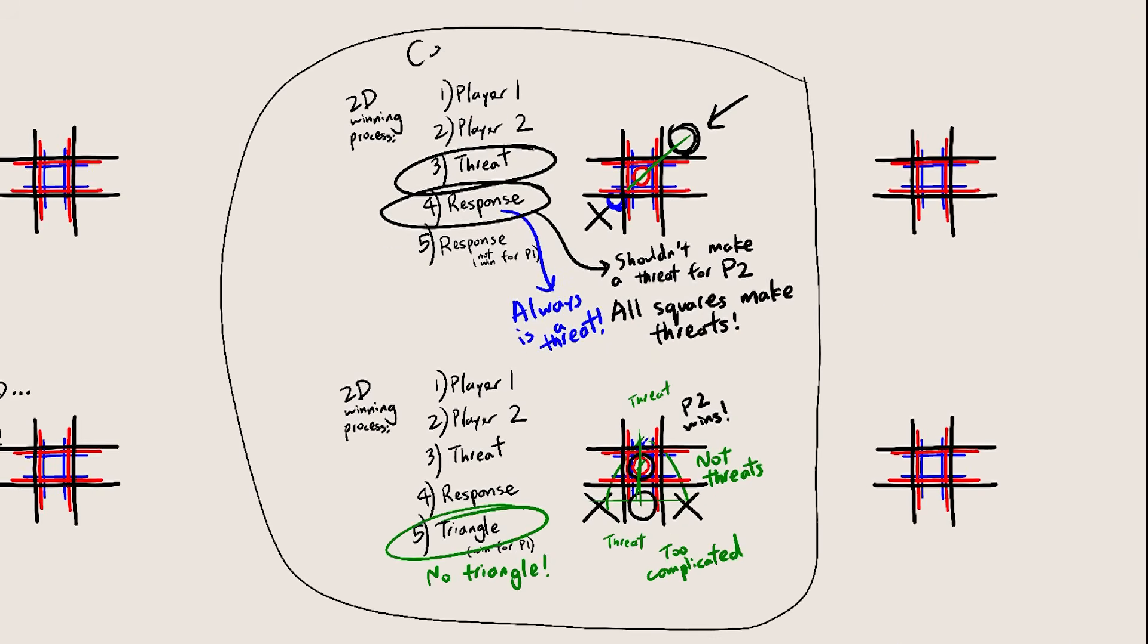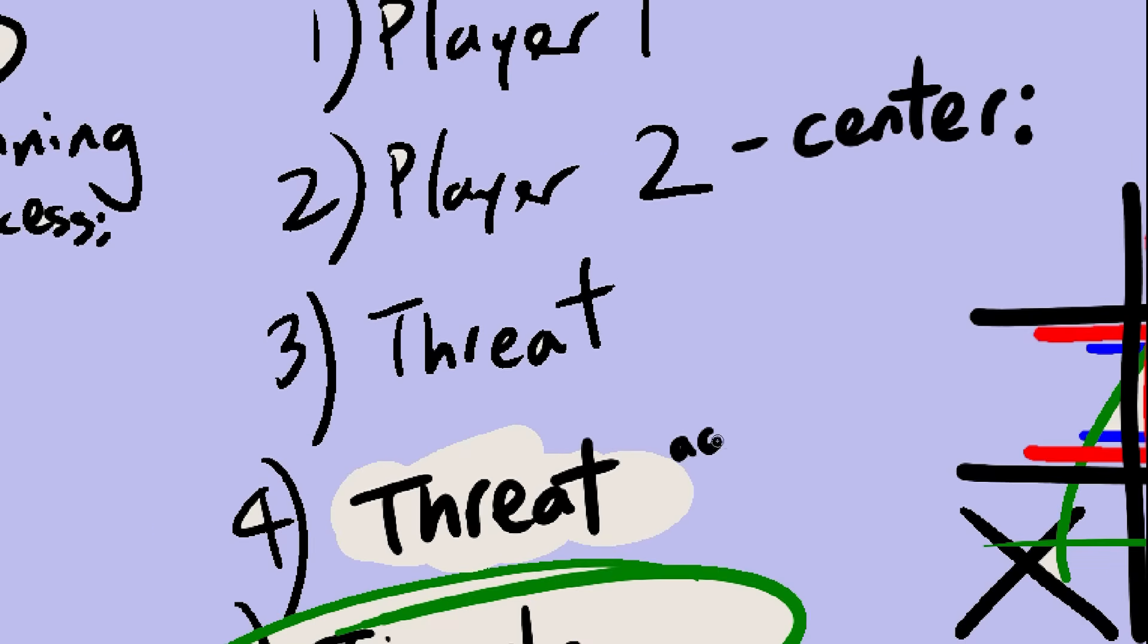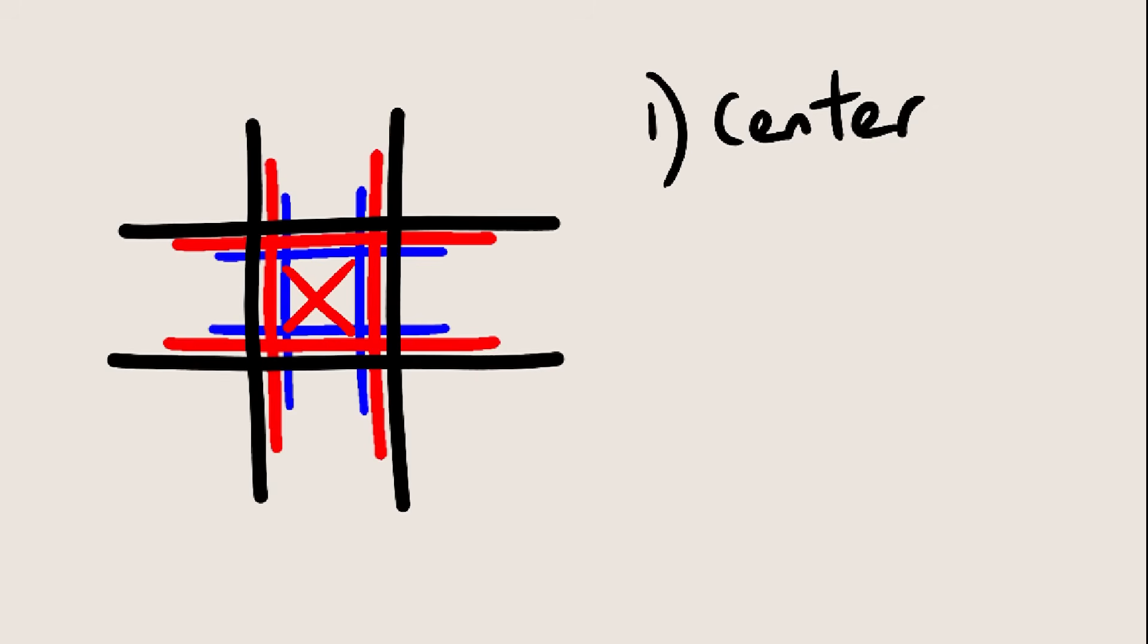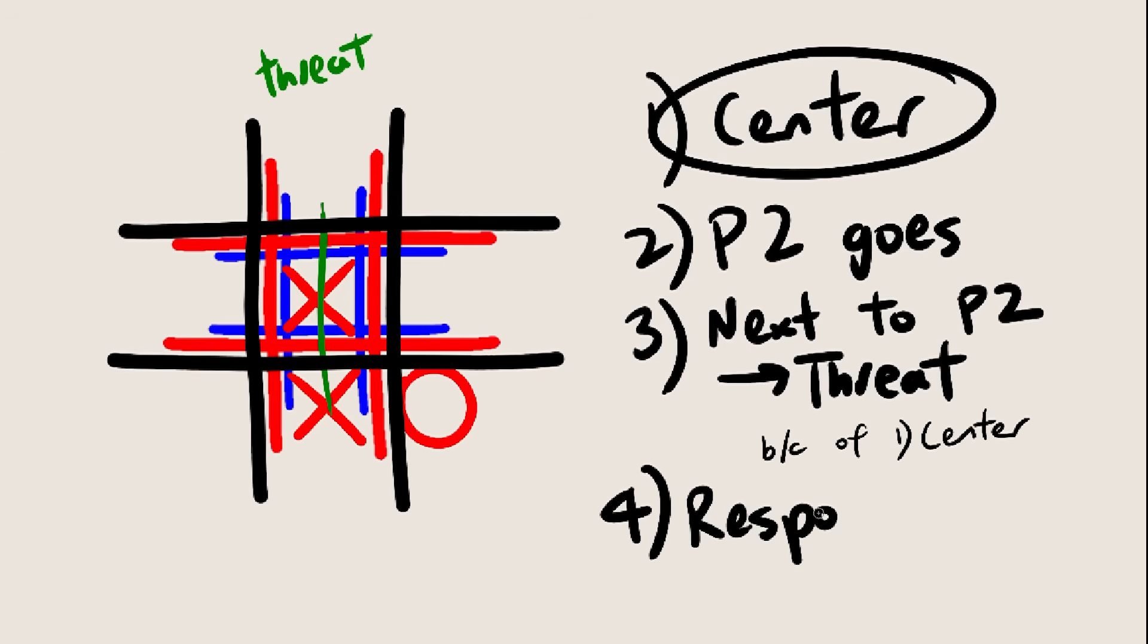Anyway, the point is, the center spot is too powerful. If player 2 has it, then we won't get an automatic win. So it looks like our very first move should be to grab the center square. Now, wherever player 2 decides to go, we just go next to them. This creates a threat every time, because we have control of the center. Remember what we learned in 2D? The center is very good at creating threats. So now, because of the threat, player 2 is forced to go here, which doesn't create a threat because they don't have the center.